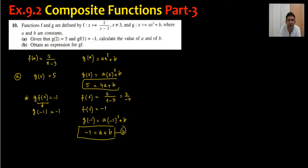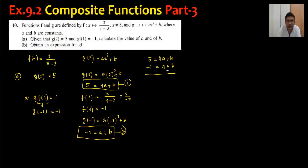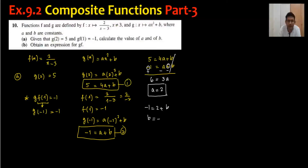Now we just need to solve simultaneously. We have 5 equals 4a plus b as equation 1, and minus 1 equals a plus b as equation 2. Using elimination, subtracting gives 3a equals 6, so a equals 2. Substituting back: minus 1 equals 2 plus b, so b equals minus 3.